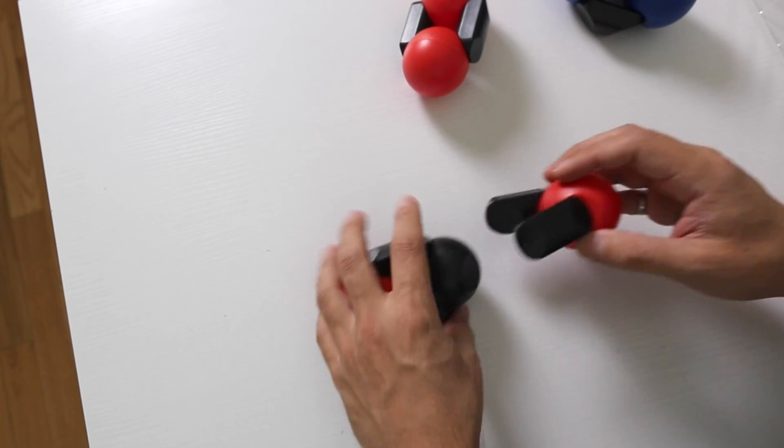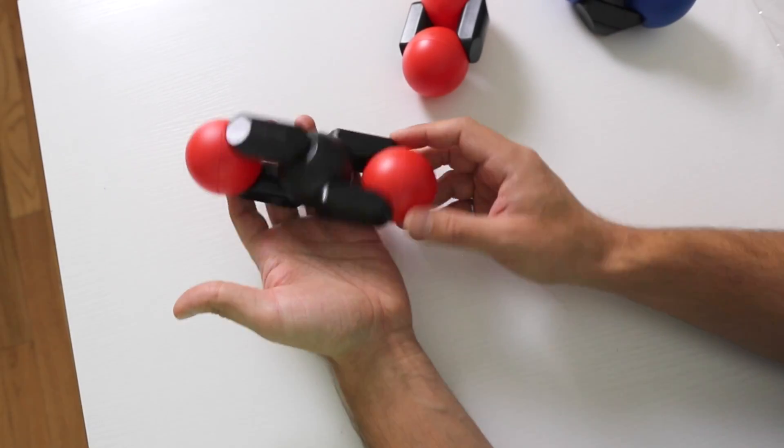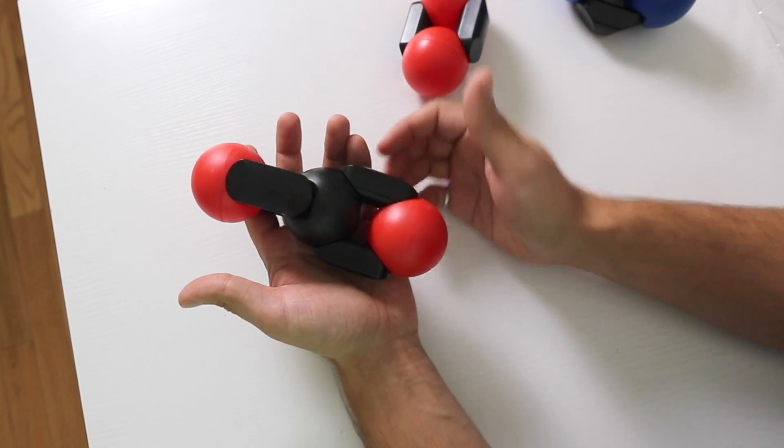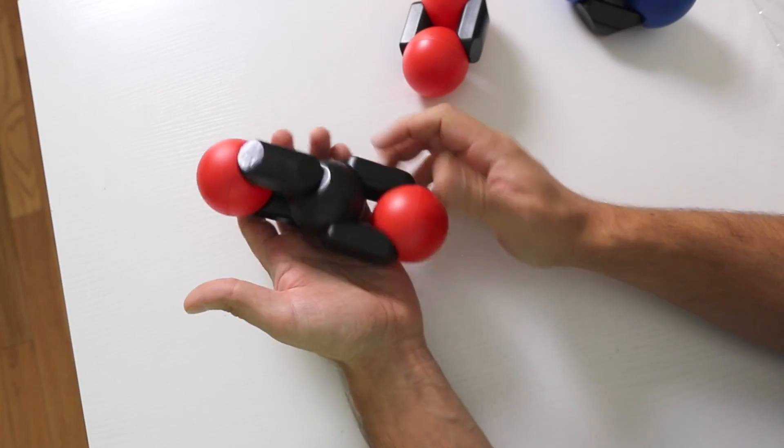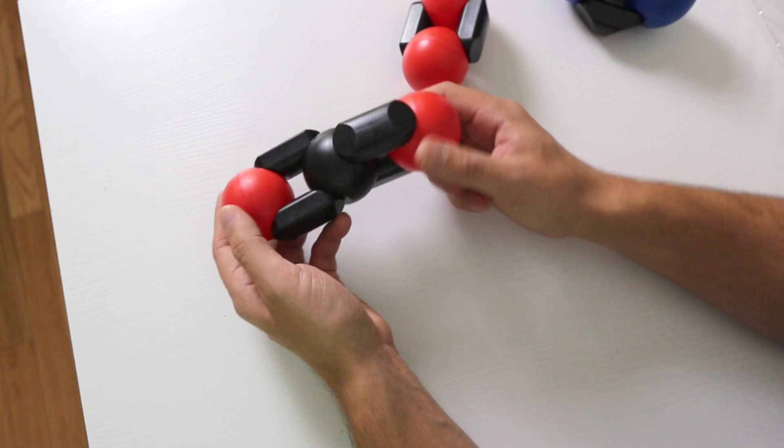Now once you've done this, we have filled all of the bonding sites on the carbon and the oxygens and we have CO2. And this is a double bonded molecule.